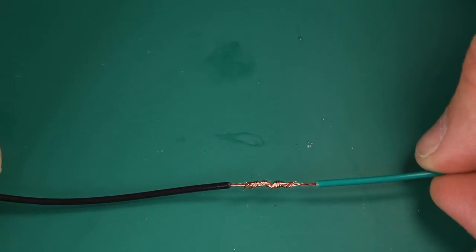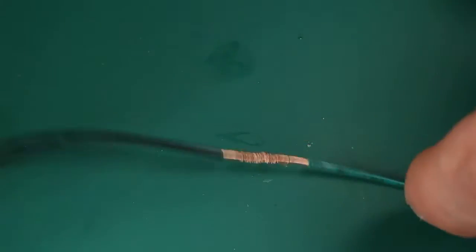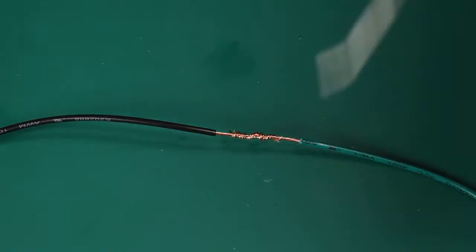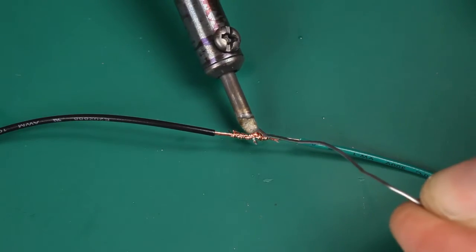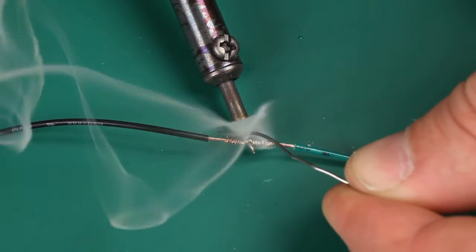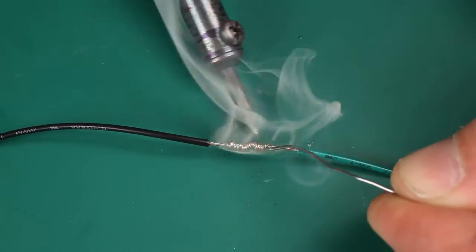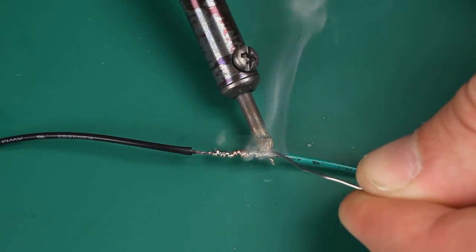That is called the Western Union Splice. It's actually very easy to solder. It doesn't try to get away from you. You don't need anything to hold it. And it's very, very strong.